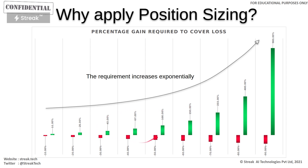The red bars show how much loss has occurred in capital. The green bars show how much return is needed to recover your money. For example, if you lose 10% of capital from one lakh rupees, you have 90,000 remaining. If you lose 80% of your capital, you will need around 400% return just to recover your money. This is why position sizing is very important.